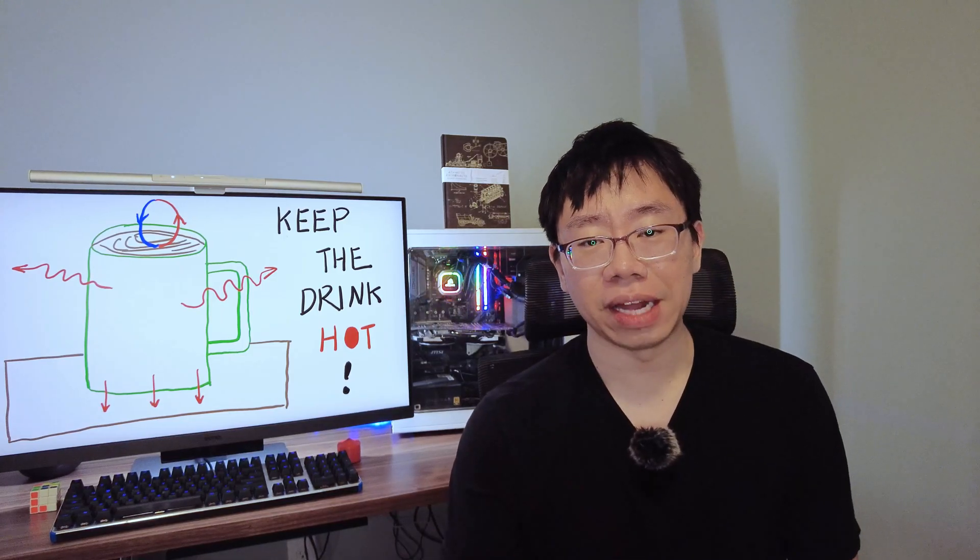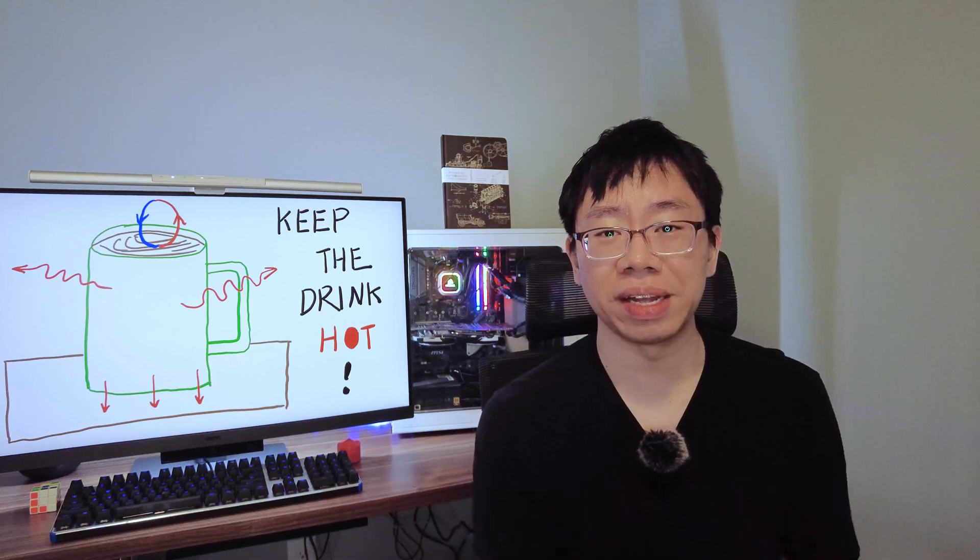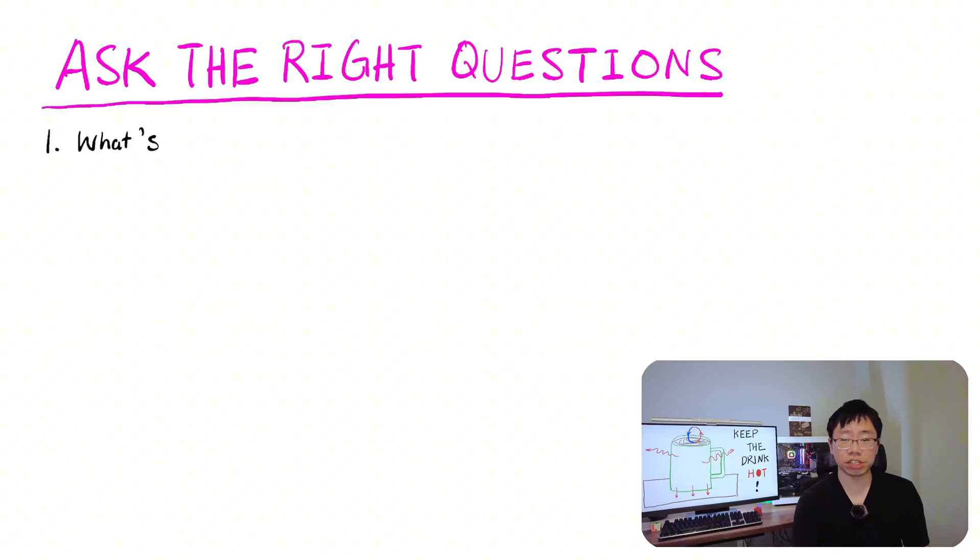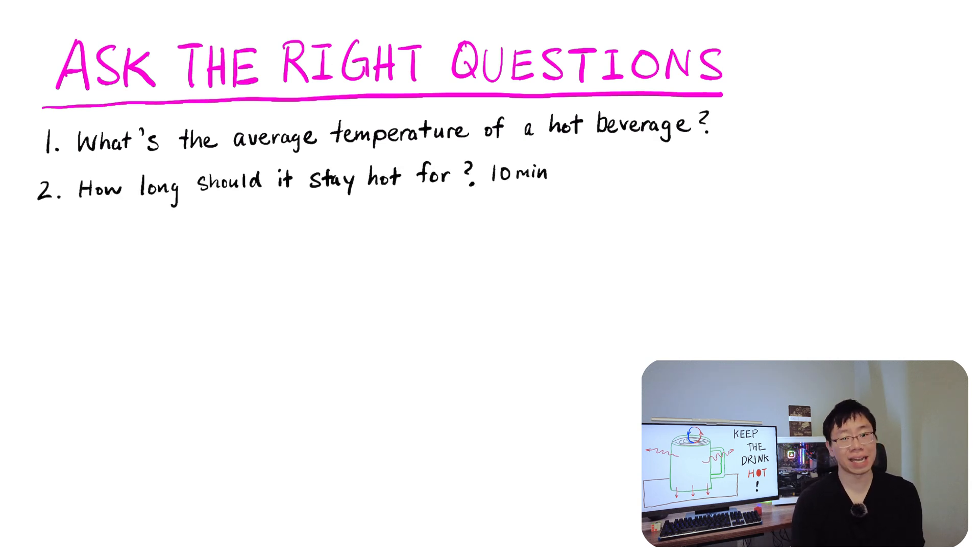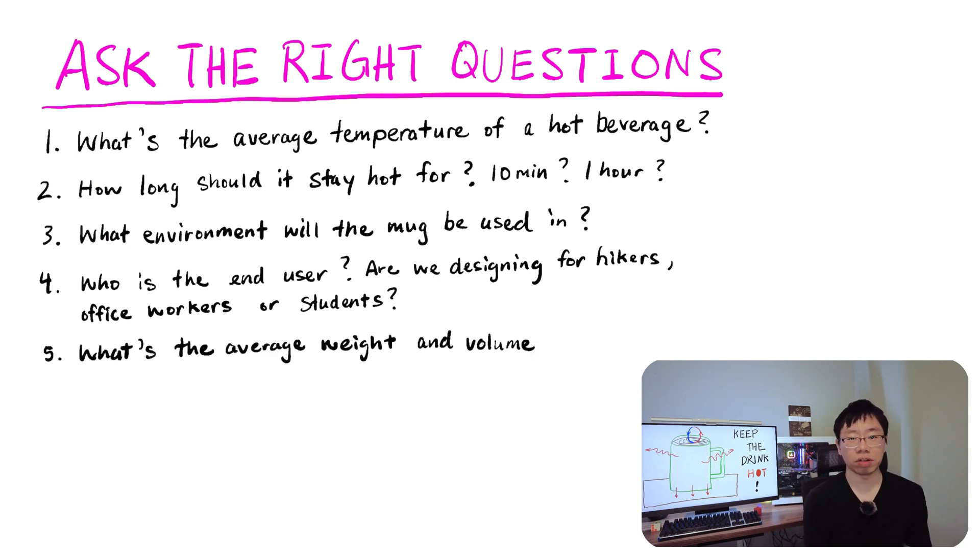So the next step an engineer would do is ask the right questions and determine the constraints. What's the average temperature of a hot or cold beverage? How long should it stay hot or cold? For 10 minutes, an hour, 10 hours, or 20 hours? What environment would a mug be used in? Who's the customer?